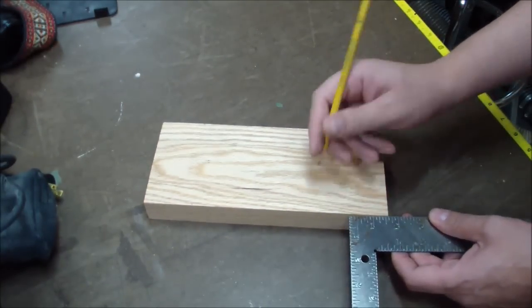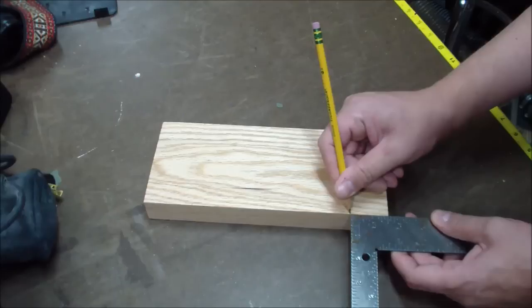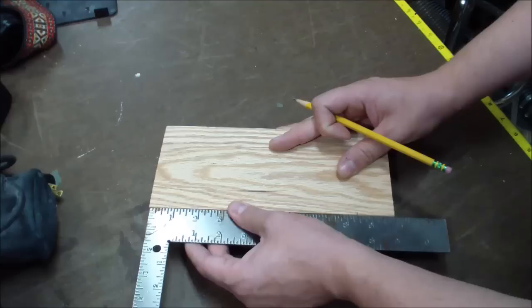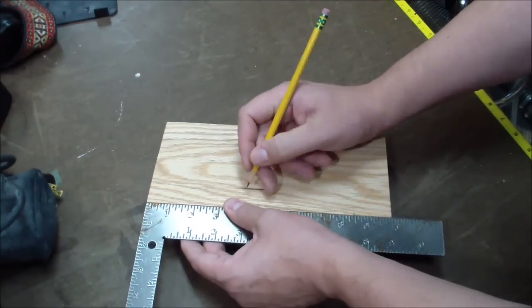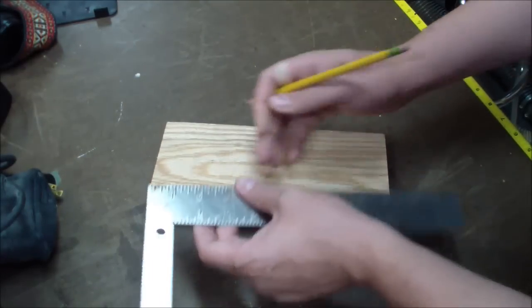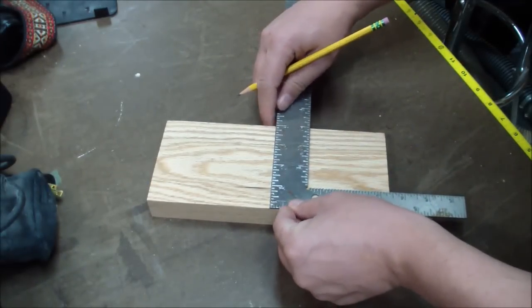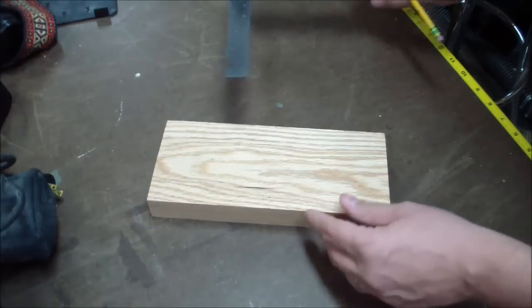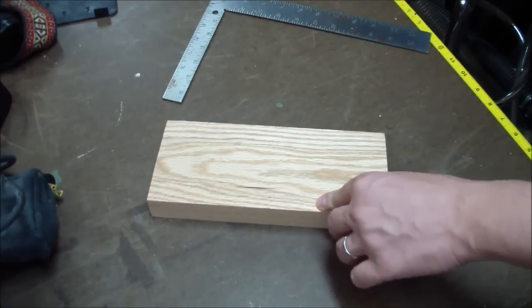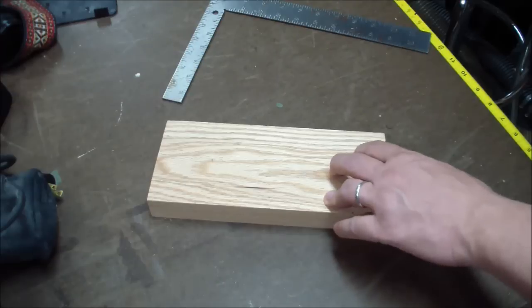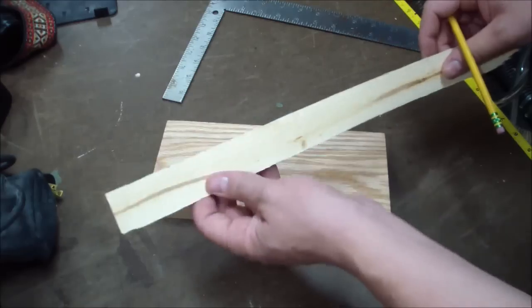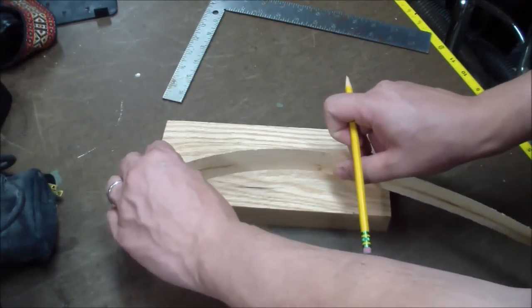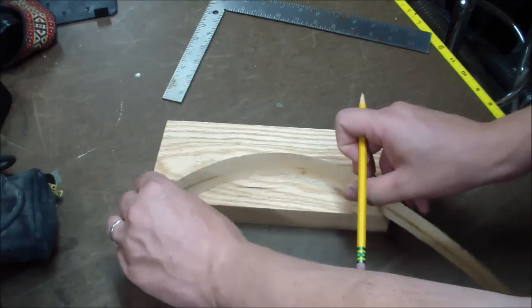So I'm going to come in about two inches on each side. My board is about ten inches long, so I'm going to go right in the middle here to about five, and I'm actually going to come up about a half an inch.